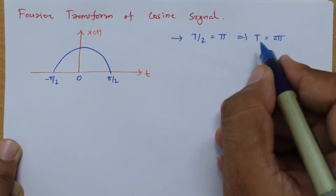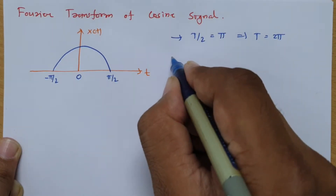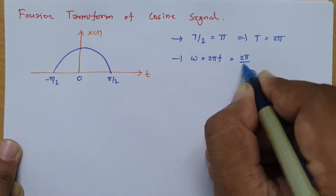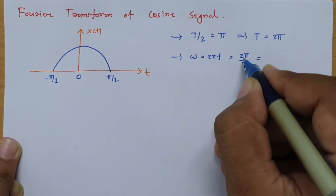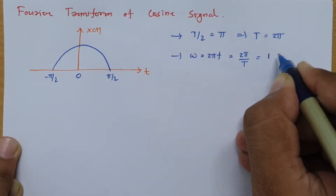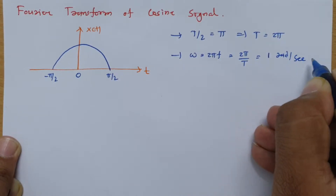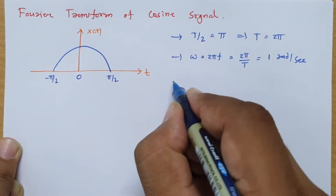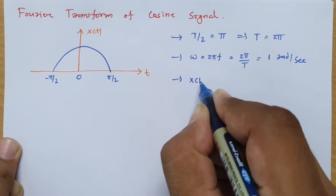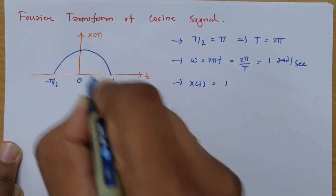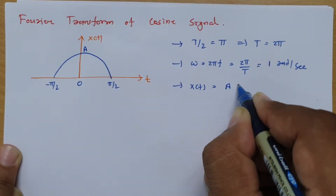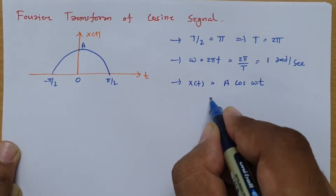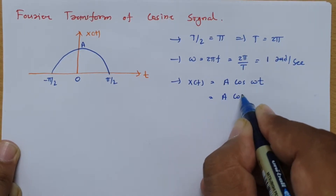If I want to calculate angular frequency ω, then as we know ω equals 2πf, which is 2π divided by T. If we place T = 2π, the 2π terms cancel, and we can say ω equals 1 radian per second. So the cosine signal x(t) with amplitude A can be written as x(t) = A·cos(ωt), and since ω = 1, this simplifies to x(t) = A·cos(t).